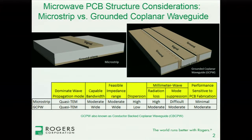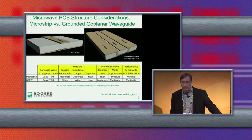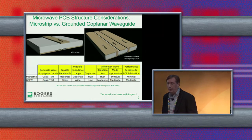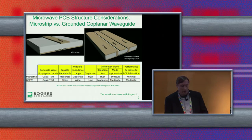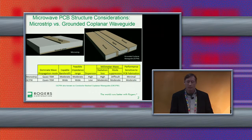There are also comparisons for capable bandwidth. In general, microstrip is limited in bandwidth compared to grounded coplanar waveguide — you can typically get a wider bandwidth out of grounded coplanar, depending on how you design it. The impedance range is also typically wider for a grounded coplanar waveguide than a microstrip, simply because of the different variables you have in the grounded coplanar design to vary the impedance.